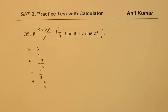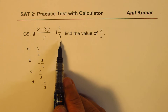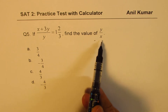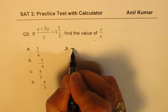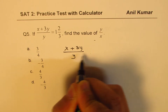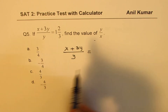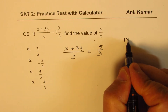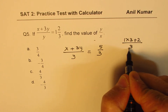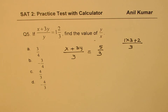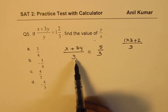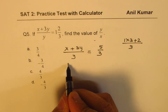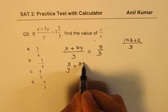Question 5: if (x plus 3y) over y equals 1 and 2 over 3, find the value of y over x. The mixed number 1 and 2/3 can be written as 5 over 3. We don't need to solve for individual variables — instead, break the left side: x over y plus 3y over y equals 5 over 3.